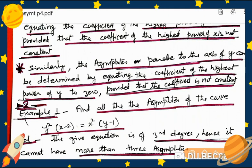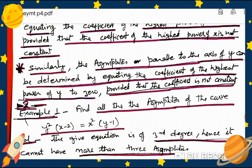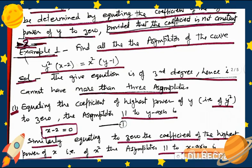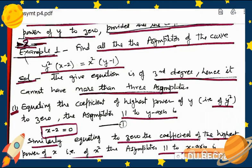Similarly, the asymptotes parallel to the axis of y — just as we found them for the axis of x — can be determined by equating the coefficient of the highest power of y to zero, provided that the coefficient is not a constant. These are the two definitions we will use for our numerical examples.